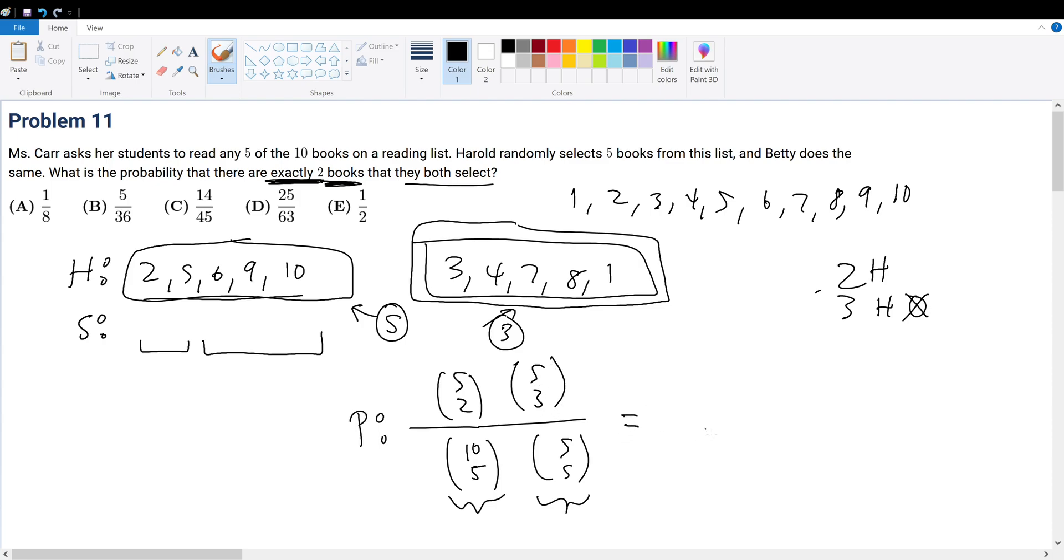So with this, we solved the question, because we understood the question, and thus, we're able to write the probability out correctly. Now, what is 10 pick 5 times 5 pick 5? 5 pick 5 is just 1. I only wrote it there just for logical reasoning. But on the actual test, you don't have to write it.